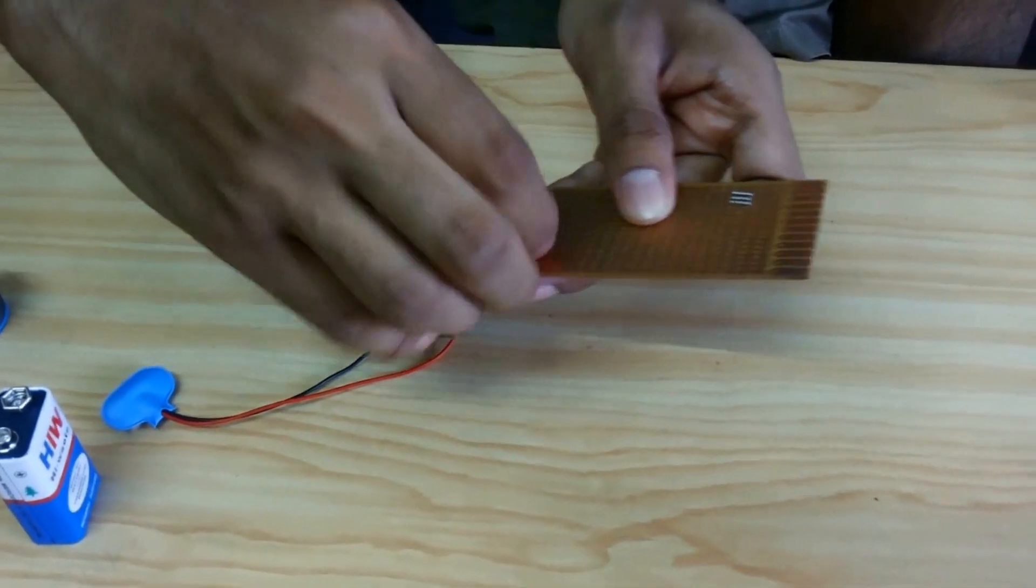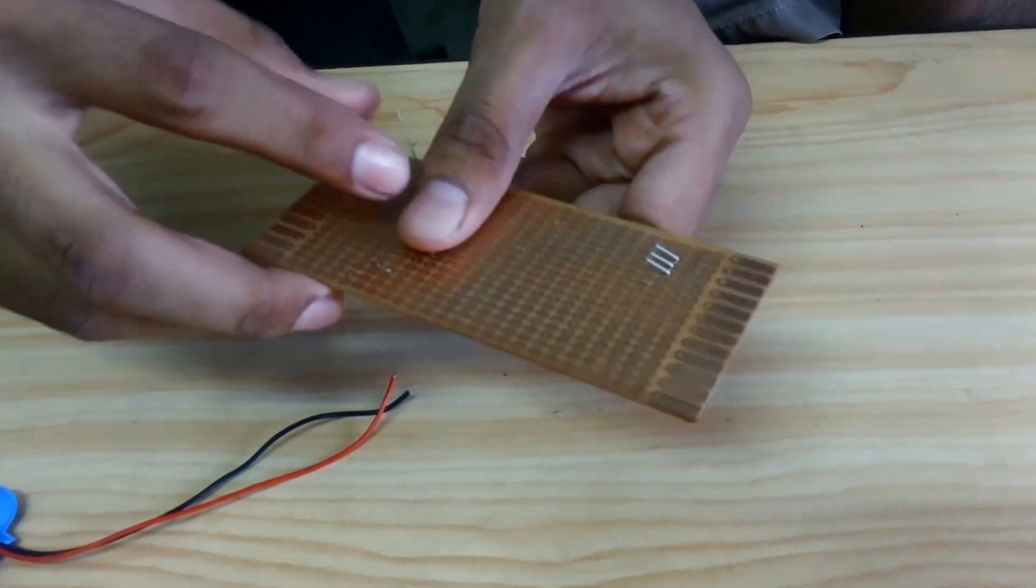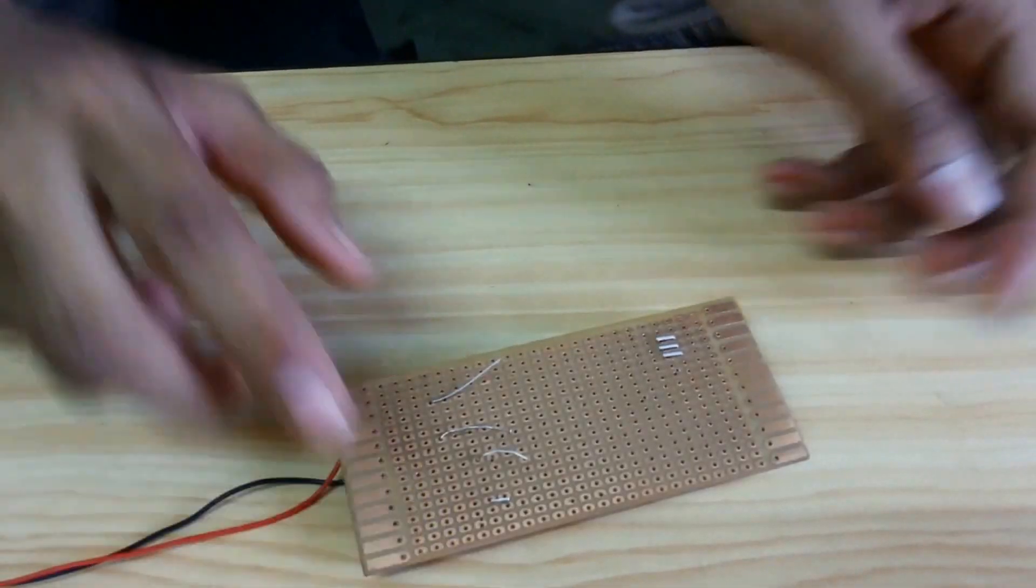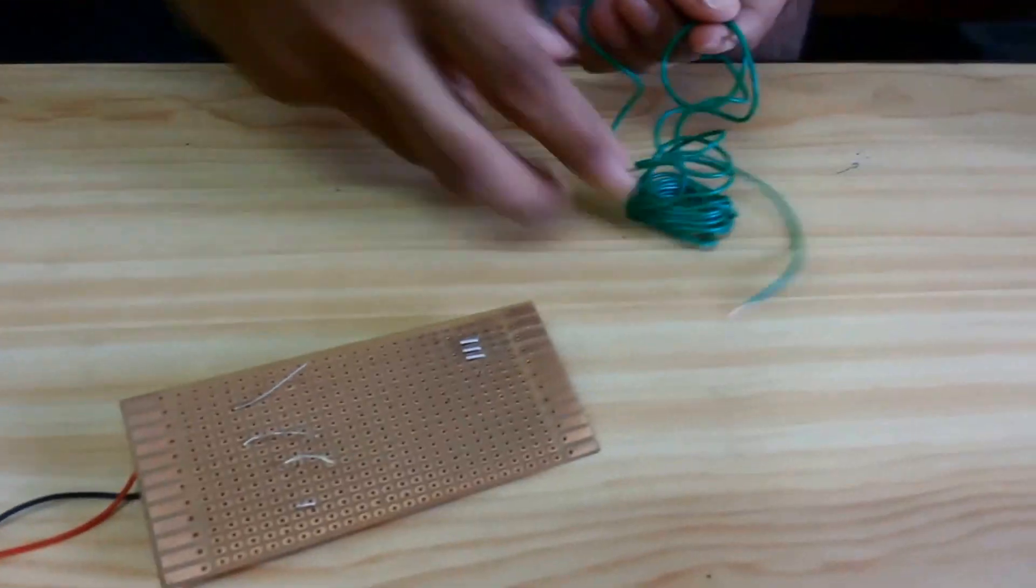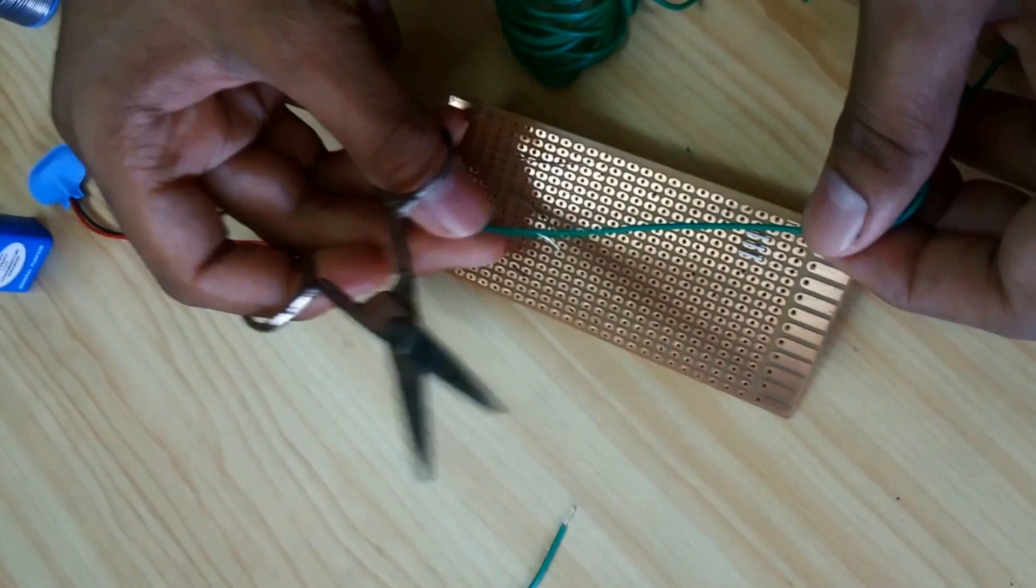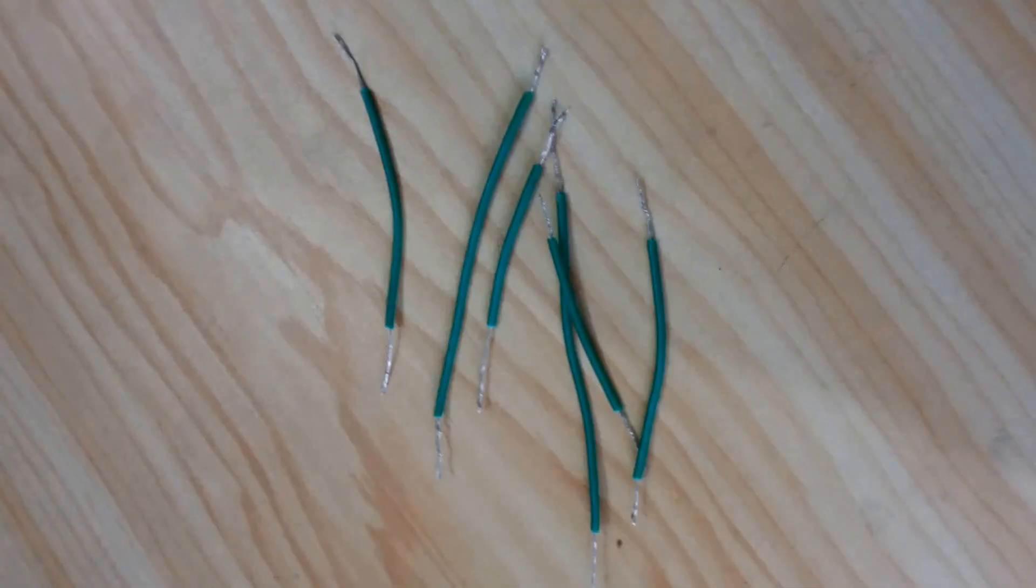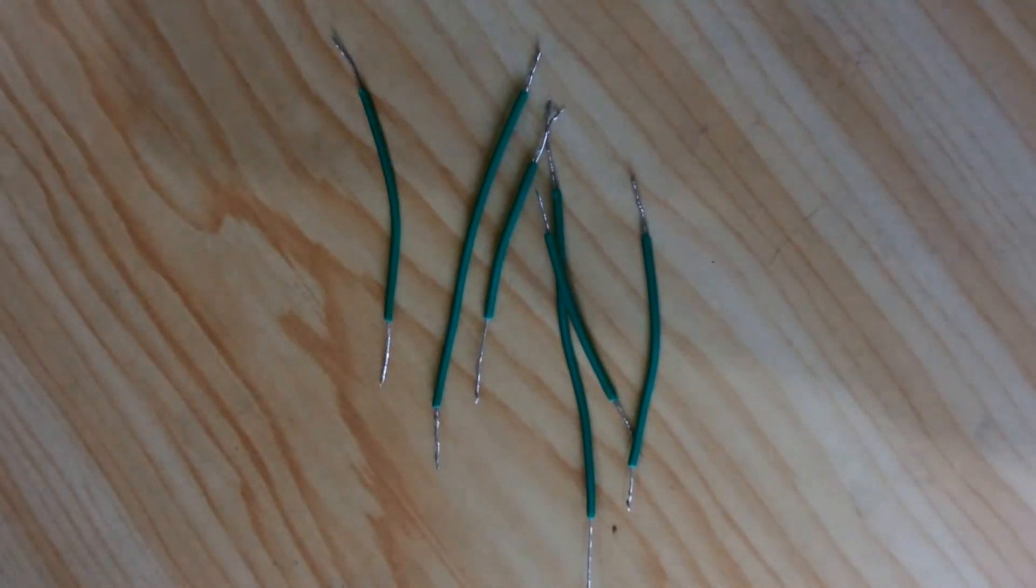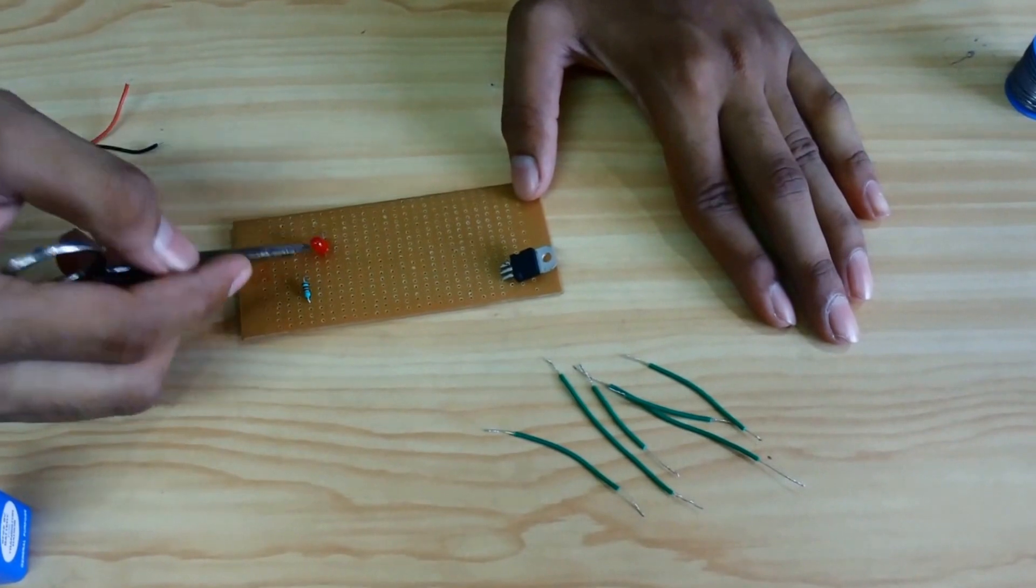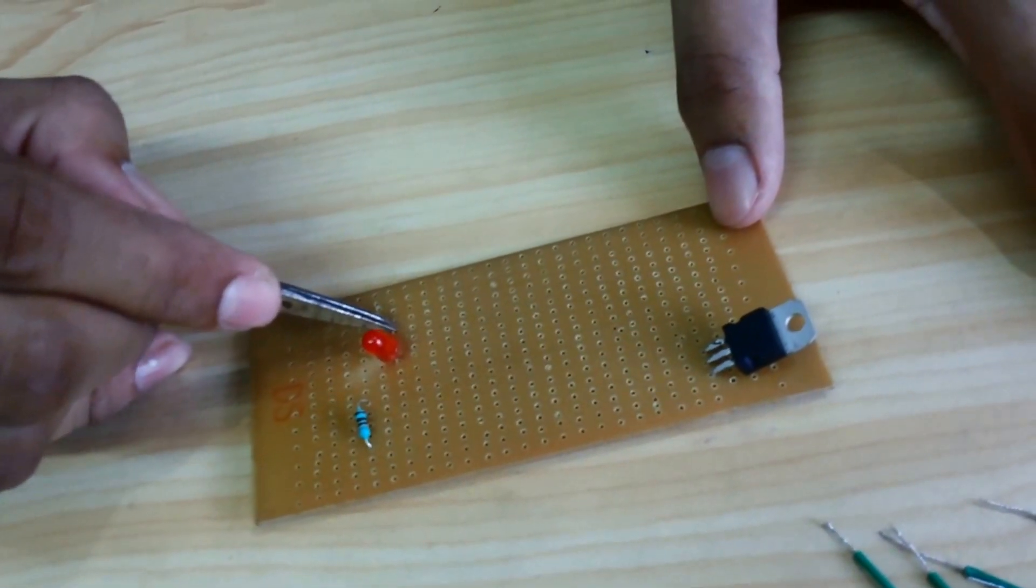Now for this we will need some little wire. Now get some wire. So here is the positive end of LED and here is the negative end of LED.